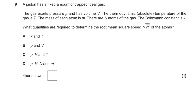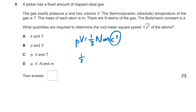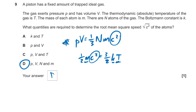Question 9: a piston has a fixed amount of trapped ideal gas exerting pressure p and volume V. What quantities are needed to determine the root mean square speed of the atoms? From the formula sheet: pV = ⅓Nmc². So we need p, V, N, and m. The alternative using kinetic energy would be m, k, and T, but that isn't an option. The answer is D.